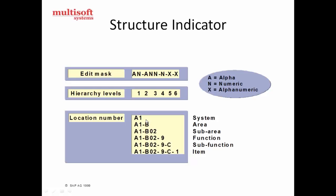A-1 is the first level, which is the system. A-1-B is the second level of hierarchy, which is the area. The third level is sub-area, the fourth is functions, the fifth is sub-functions, and the sixth is the item. The item is essentially the equipment.